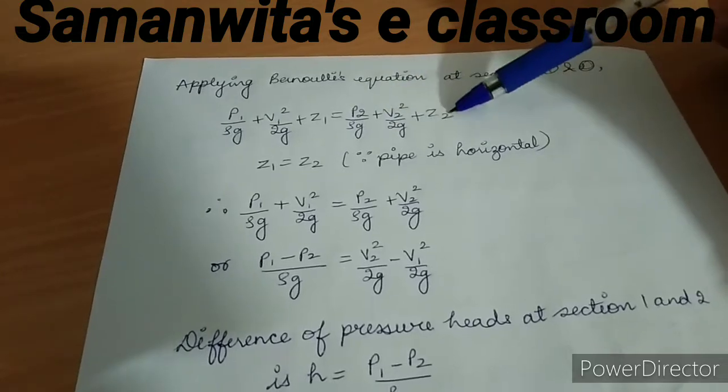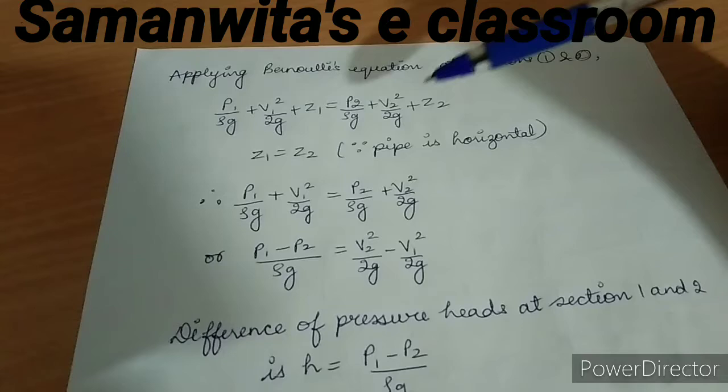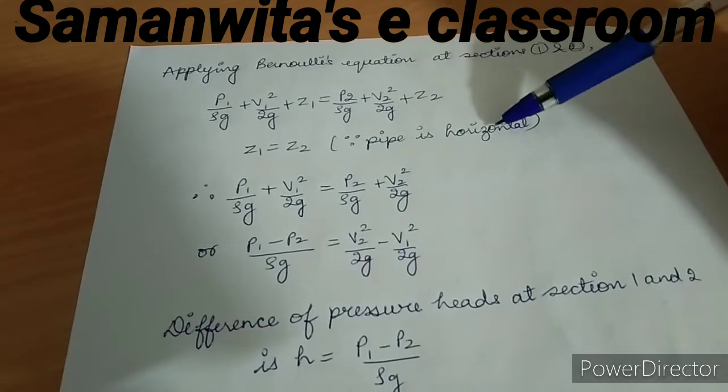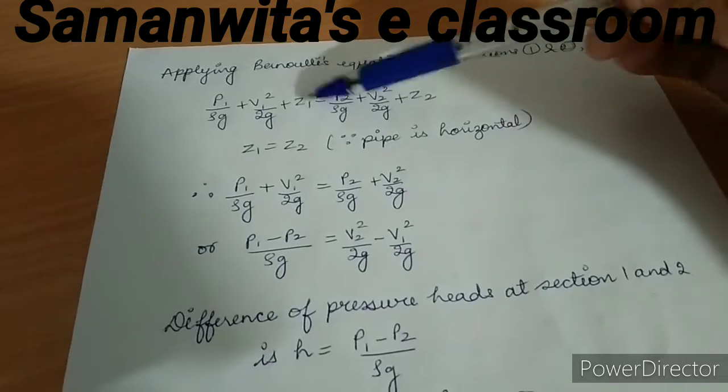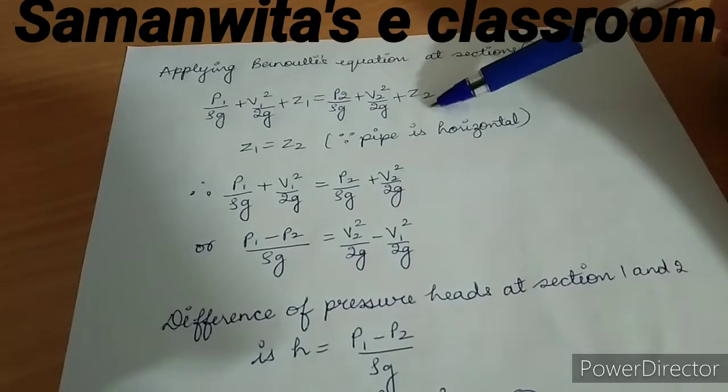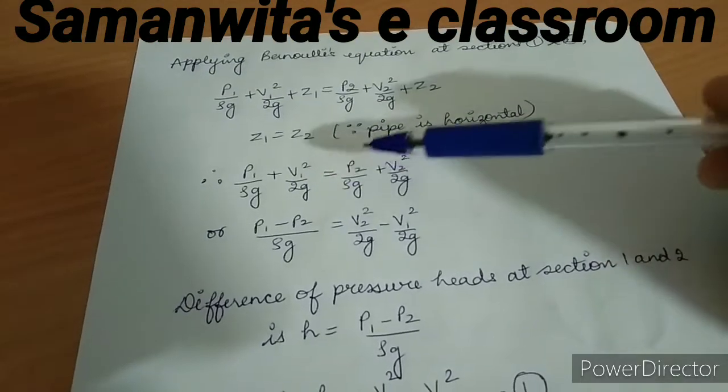We have already seen this equation in the previous sessions. Now since the pipe which we are taking is horizontal, therefore I will consider z1 is equal to z2, they both get cancelled out from both the ends. So what remains is p1/ρg + v1²/2g = p2/ρg + v2²/2g.